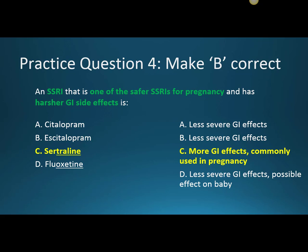Question four: an SSRI that is one of the safer SSRIs for pregnancy and has harsher GI side effects is? The answer is C, Sertraline. With sertraline, the GI side effect we especially see — even though GI effects are common across all of these medications — is a notably higher chance of diarrhea. While many SSRIs can be used in pregnancy, sertraline has historically been quite common for this. A and B have less severe GI effects than sertraline, and D, fluoxetine, has less severe GI effects and has potentially shown some effects on the baby if used in pregnancy.